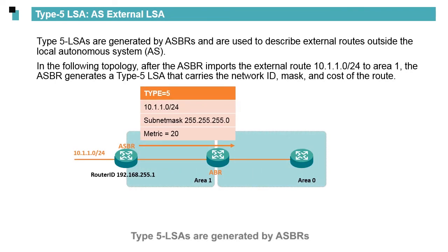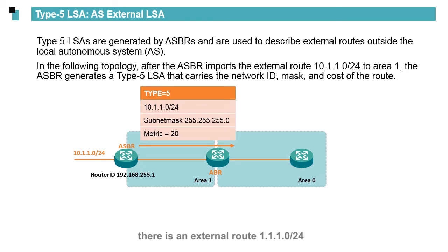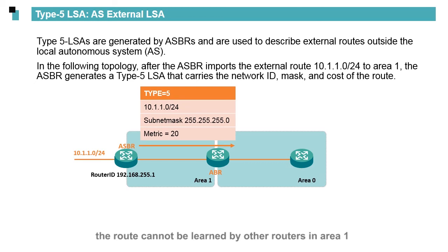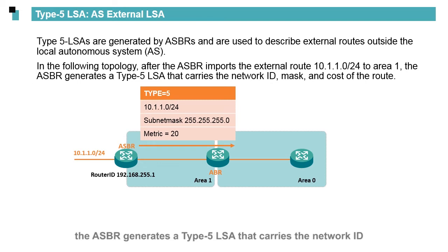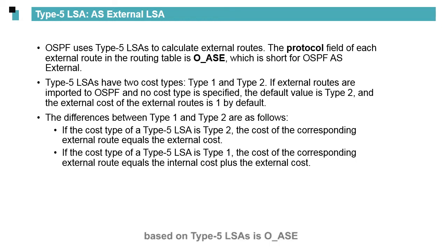Type 5 LSAs are generated by ASBRs and are used to describe external routes outside the local autonomous system. On the network shown in this figure, there is an external route 1.1.1.0/24. Before the route is imported by the ASBR, the route cannot be learned by other routers in Area 1. After the ASBR imports the route to Area 1, the ASBR generates a Type 5 LSA that carries the network ID, mask, and cost of the route. In the routing tables of Huawei devices, the protocol field of routes calculated based on Type 5 LSAs is OASE, indicating that the routes are external routes.